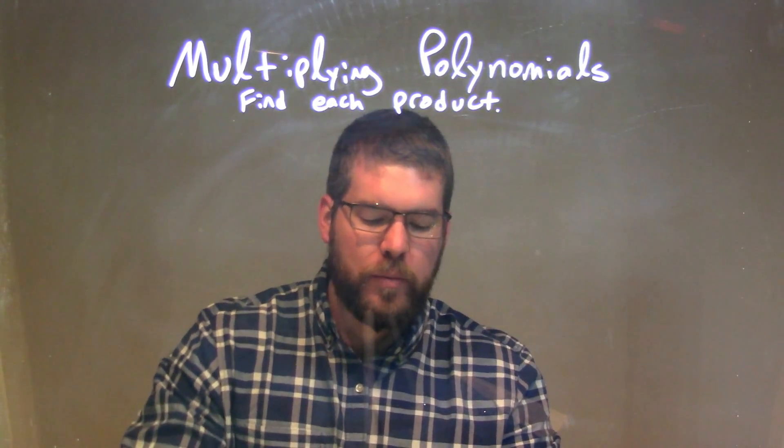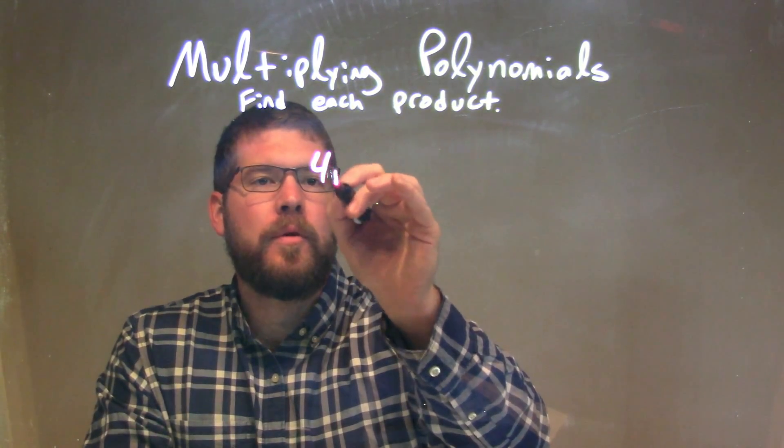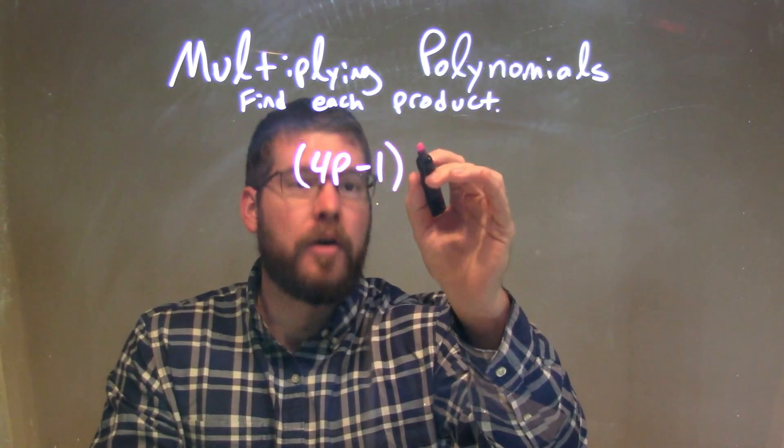If I was given this polynomial, (4p - 1) in parentheses, all squared.